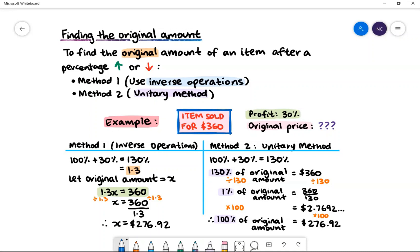Method one is to set up an equation and use inverse operations to solve for the value of the original amount. Method two is the unitary method.